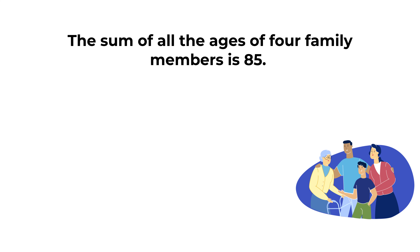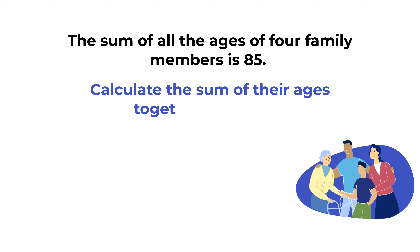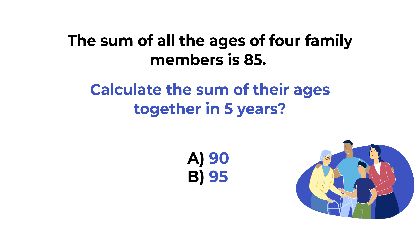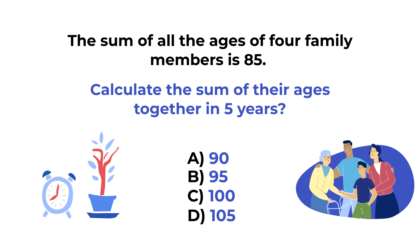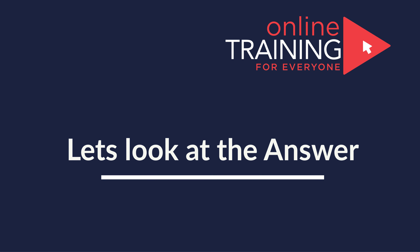Here's a puzzling question you might frequently see on the test. The sum of all the ages of four family members is 85. What would be the sum of their ages together in five years? Choices: A) 90, B) 95, C) 100, D) 105. Give yourself 20 to 30 seconds to see if you can come up with the solution.